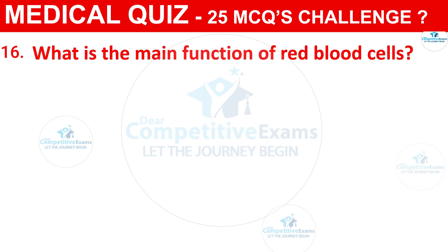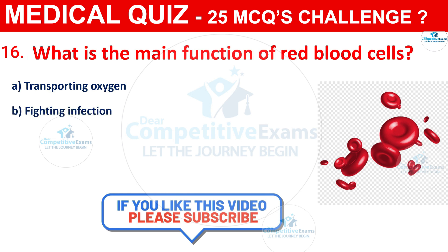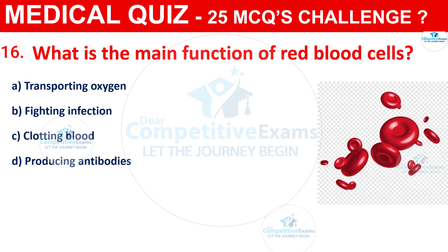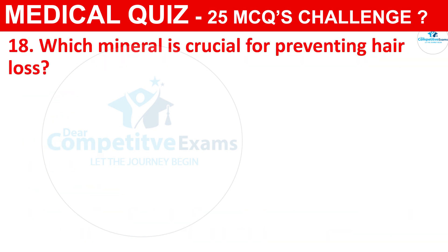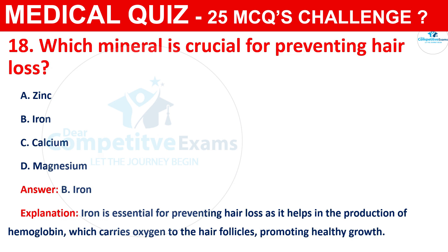Question 16: What is the main function of red blood cells? The options are Transporting oxygen, Fighting infection, Clotting blood, or Producing antibodies. Question 18: Which mineral is crucial for preventing hair loss? The options are Zinc, Iron, Calcium, or Magnesium. The correct answer is B, that is Iron. Iron is essential for preventing hair loss as it helps in the production of hemoglobin, which carries oxygen to the hair follicles, promoting healthy hair growth.